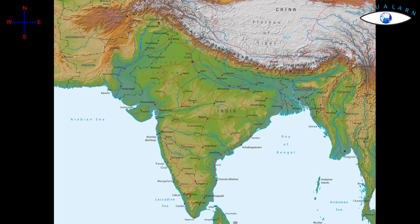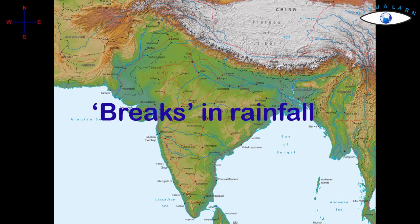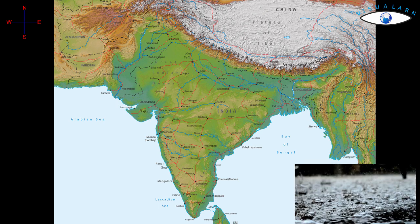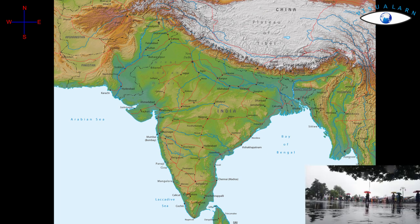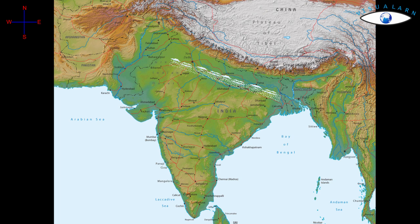Another phenomenon associated with the monsoon is its tendency to have breaks in rainfall. The monsoon rains take place only for a few days at a time and are interspersed with rainless intervals. These breaks in the monsoon are related to the movement of the monsoon axis. When the axis of the monsoon lies over the plains, rainfall is good in those parts. However, whenever the axis shifts closer to the Himalayas, there are long dry spells in the plains, and widespread rain occurs in the mountainous catchment areas of the Himalayan rivers.